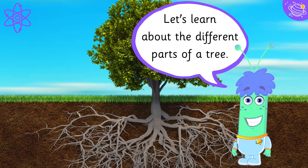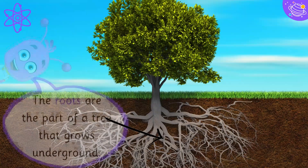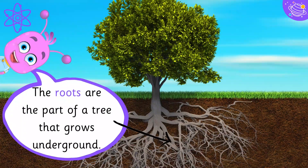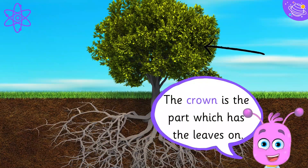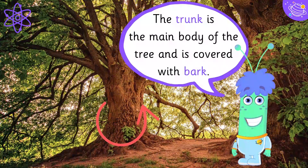Let's learn about the different parts of a tree. The roots are the part of a tree that grows underground. The crown is the part which has the leaves on. The trunk is the main body of the tree and is covered with bark.